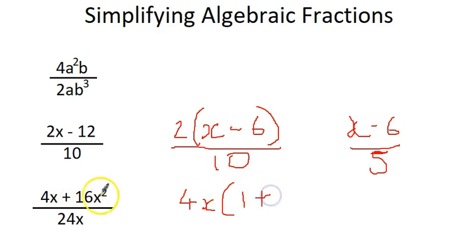And then 16x squared, you've got 16 divided by the 4 gives us 4. You've got x squared divided by the x leaves us with x. And then we would still divide it by 24x.